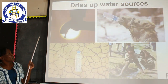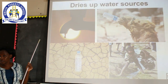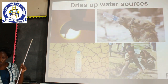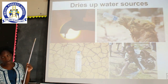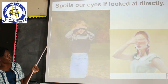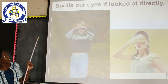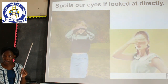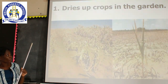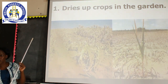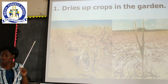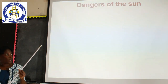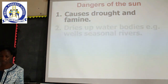Another danger of too much sunshine is that it dries up water sources like wells and seasonal rivers. Furthermore, too much sunshine spoils our eyes when we look at it directly. Too much sunshine spoils our eyesight if we look at it directly — please don't try it because it's dangerous. Too much sunshine also dries crops in the garden, leading to shortage of food and famine, and it dries up pasture for animals as well.